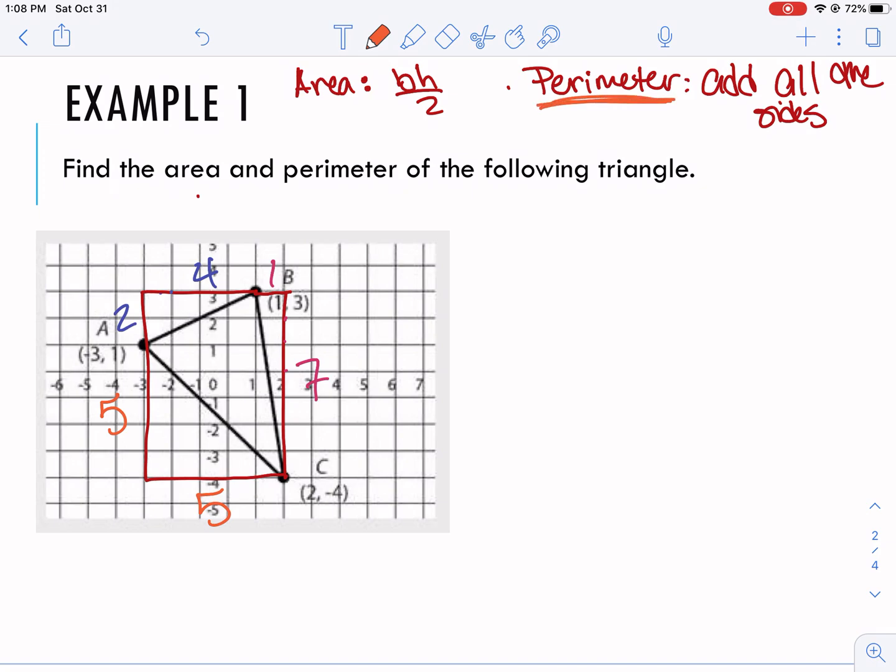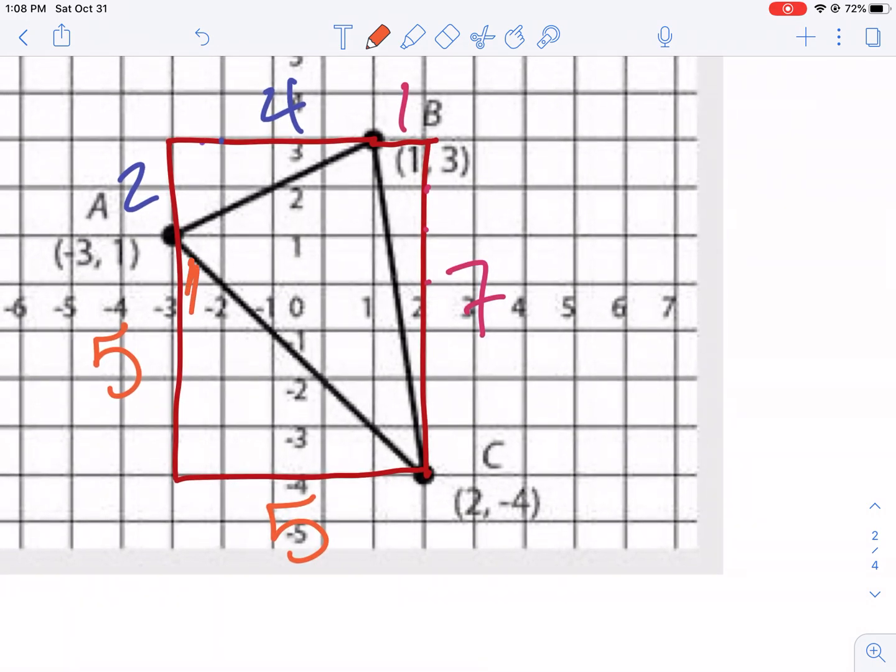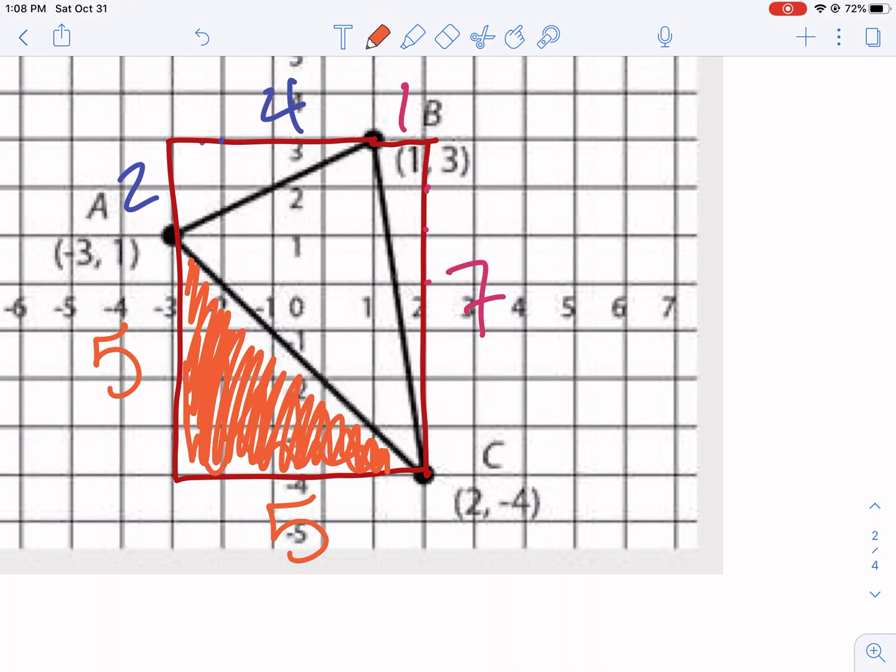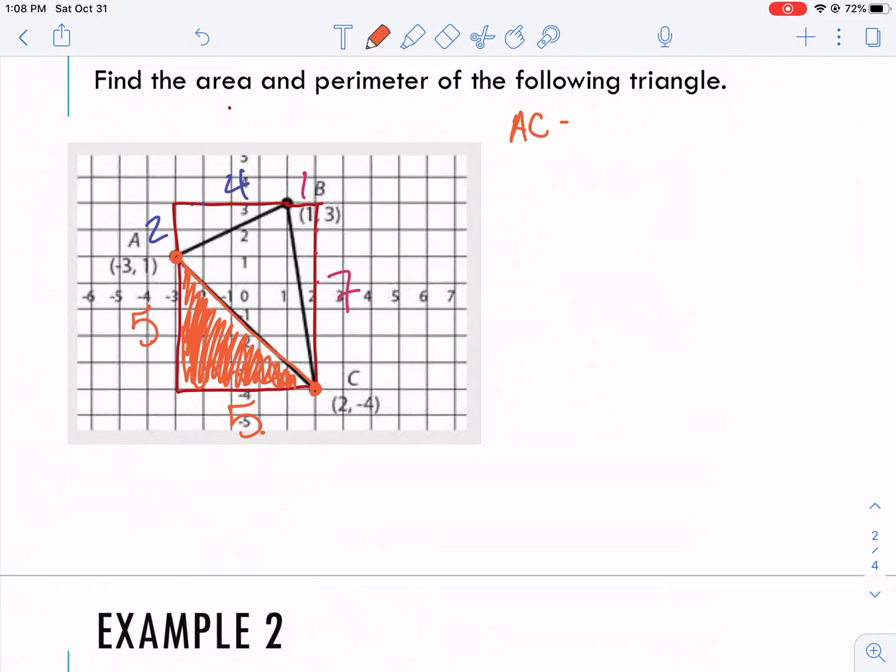We need to add all the side lengths. So looking specifically at this triangle, hopefully you recognize that there is a right triangle here, and I can find this side length AC by using the Pythagorean theorem. We have our two legs, and we're trying to find this hypotenuse here. So to find the length of AC, it's going to be 5 squared plus 5 squared. But remember, the Pythagorean theorem is A squared plus B squared equals C squared. To get C on its own, we square root it.